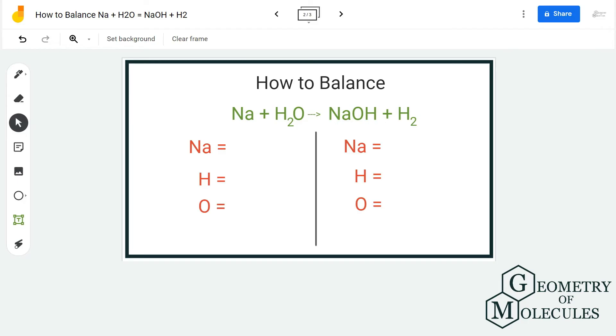Hi guys, today in this video we are going to balance this equation. On the reactant side we have Na and H2O, and on the product side we have NaOH and H2. To balance this equation, we first need to know the total number of atoms on both sides.